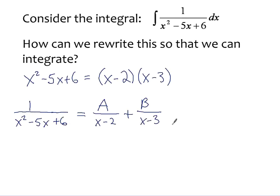Stop and convince yourself of that for a second, because all we have to do is realize that combining these fractions involves multiplying each one by the other one's denominator. So this first fraction A over x minus 2, I would multiply top and bottom by x minus 3, and the second fraction I would multiply top and bottom by x minus 2. If you did that and combined, we could produce the 1 we need on top, and we would have therefore written this single rational expression as a pair of simpler rational expressions.